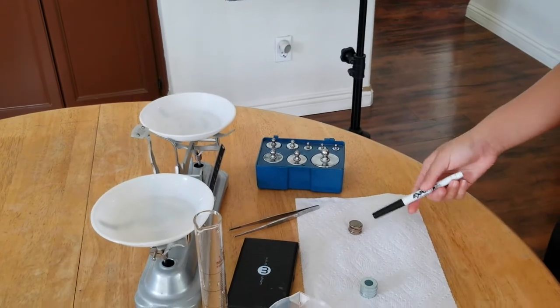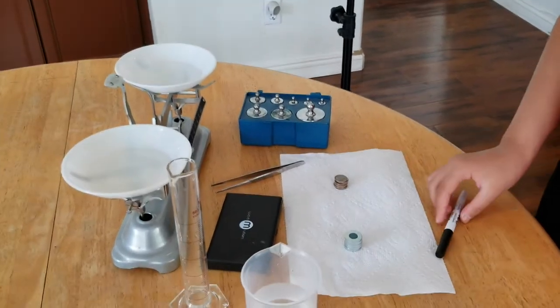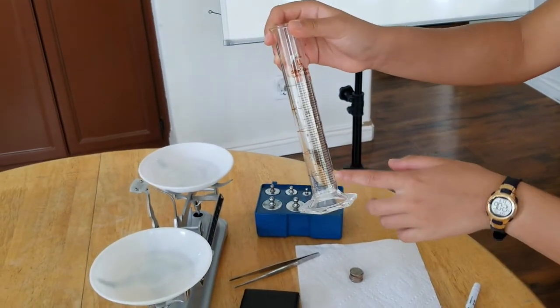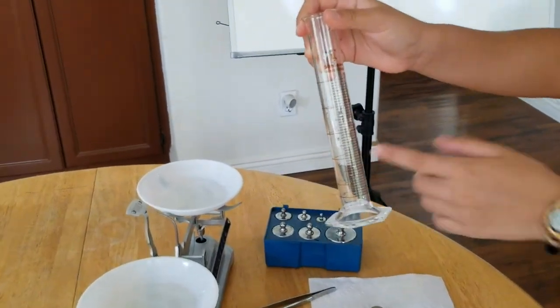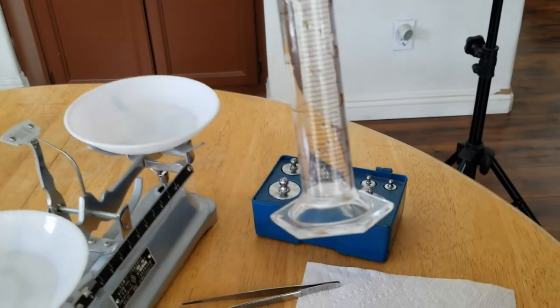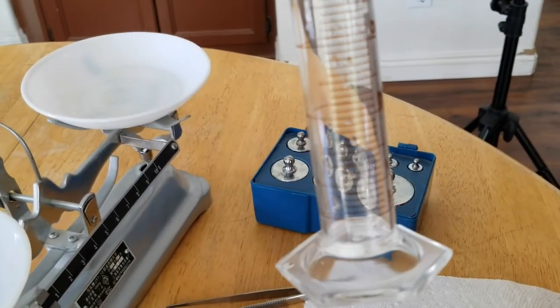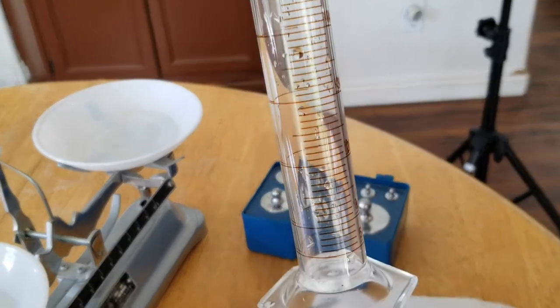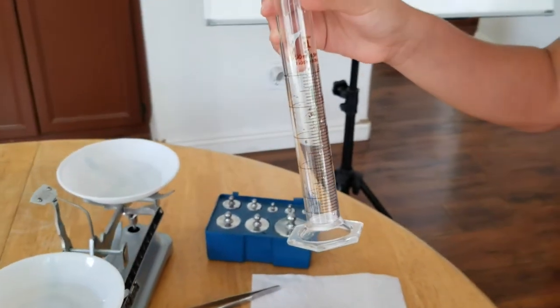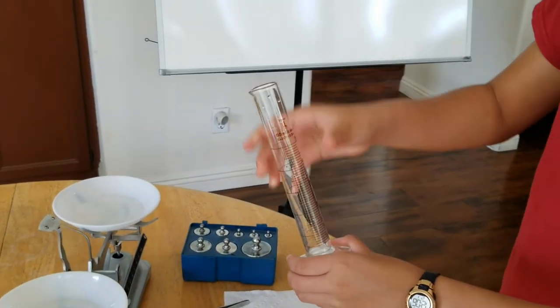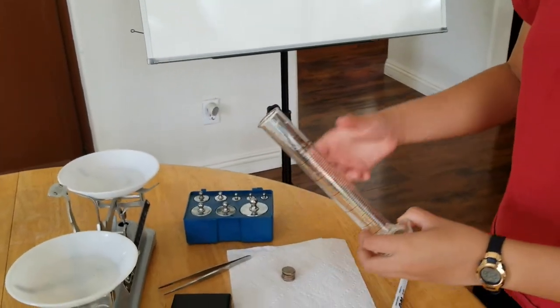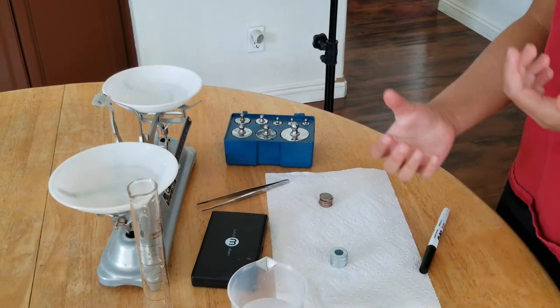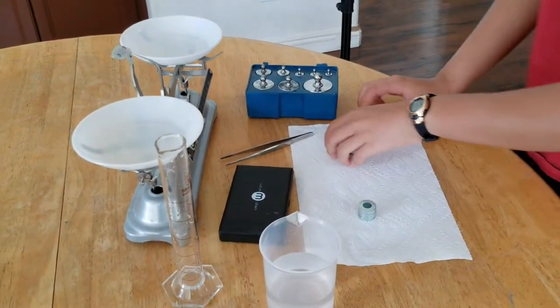So you might be wondering why we have 10 instead of just one. The reason is because if you look at the graduated cylinder, it's not very accurate, so you can't see very small movements. If you just dropped one dime in there, the water wouldn't move up very much. So instead, we're using 10, and don't worry, the ratio will still be the same. Okay, so let's start.